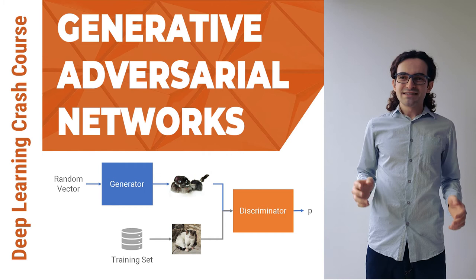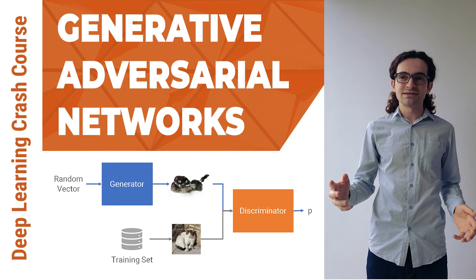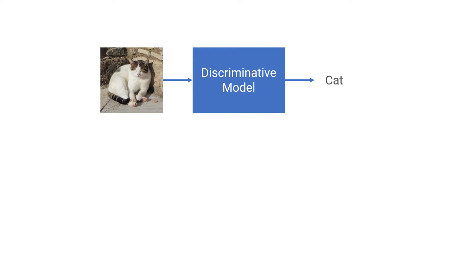Many of the examples we had in this series so far were discriminative models. Sometimes we need models that can not only recognize what's in the input, but also generate new samples. Such models are called generative models.